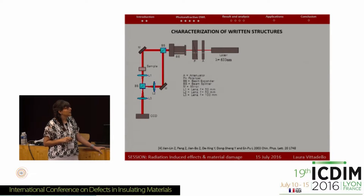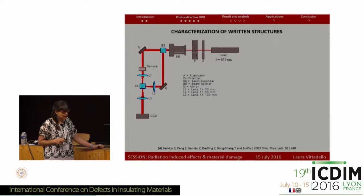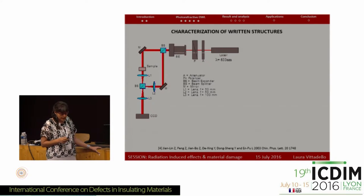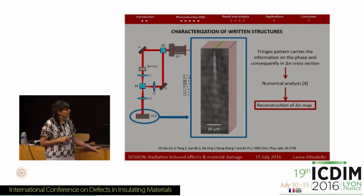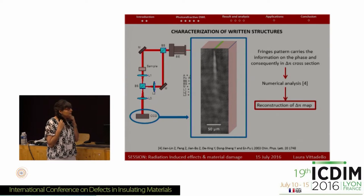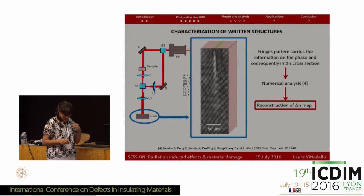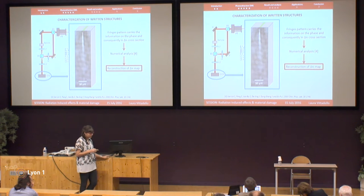To characterize these structures, another setup was developed. Basically, it's a Mach-Zehnder interferometer in which I place the sample in one of the two arms. In this way, thanks to a CCD camera, it's possible to obtain interferometric results as I show here.